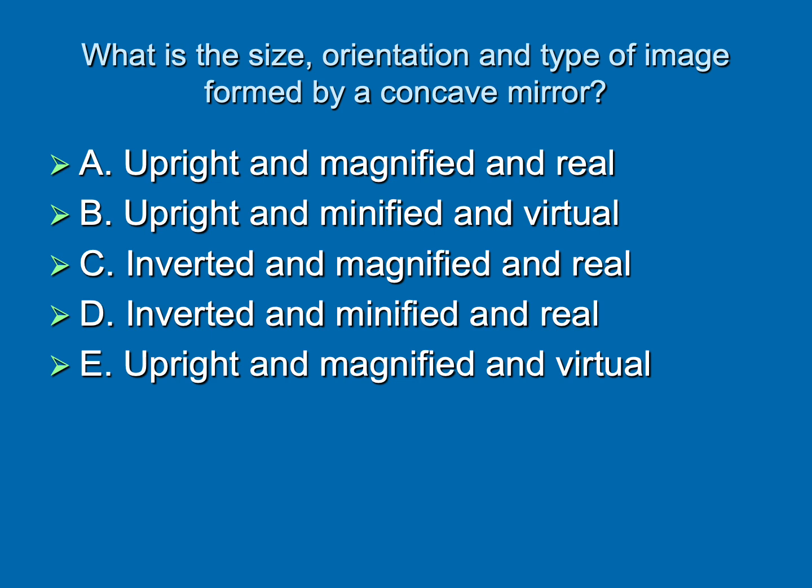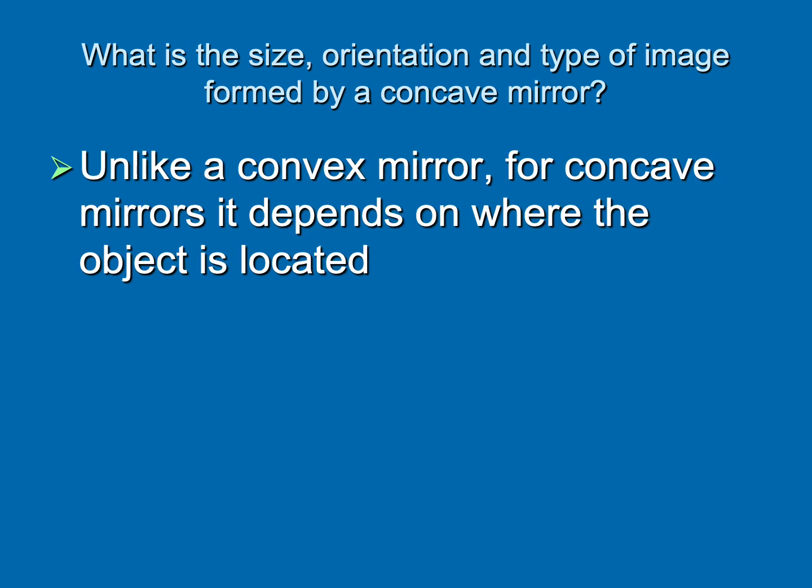A convex mirror always gives you an image that is virtual upright and minified as shown here. What size orientation and type of image is formed by a concave mirror? And it's a trick question. The answer is it depends. It entirely depends on where that object is located. So whereas if you get a convex mirror question, it's always the same answer, concave mirror, not so much. These you have to remember a bit. So let's walk through these slowly.